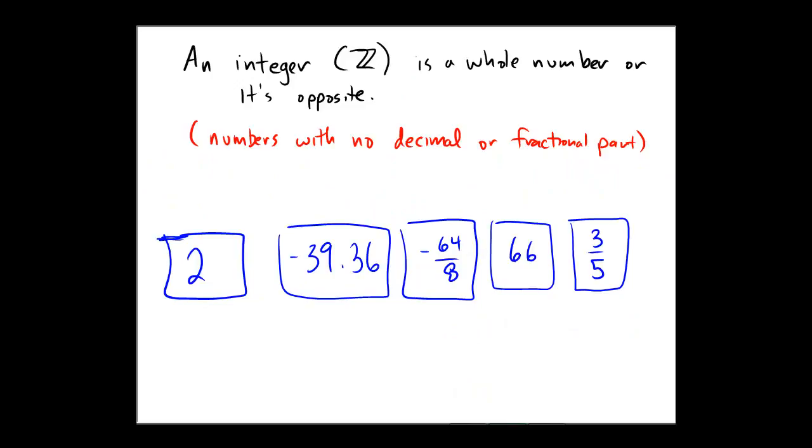Okay, the world of integers is denoted by Z from the German language. So an integer Z is a whole number or its opposite. So it's the whole numbers 0, 1, 2, 3, off to infinity, or opposites of those numbers: 0, negative 1, negative 2, negative 3, off to infinity. In the red here I've